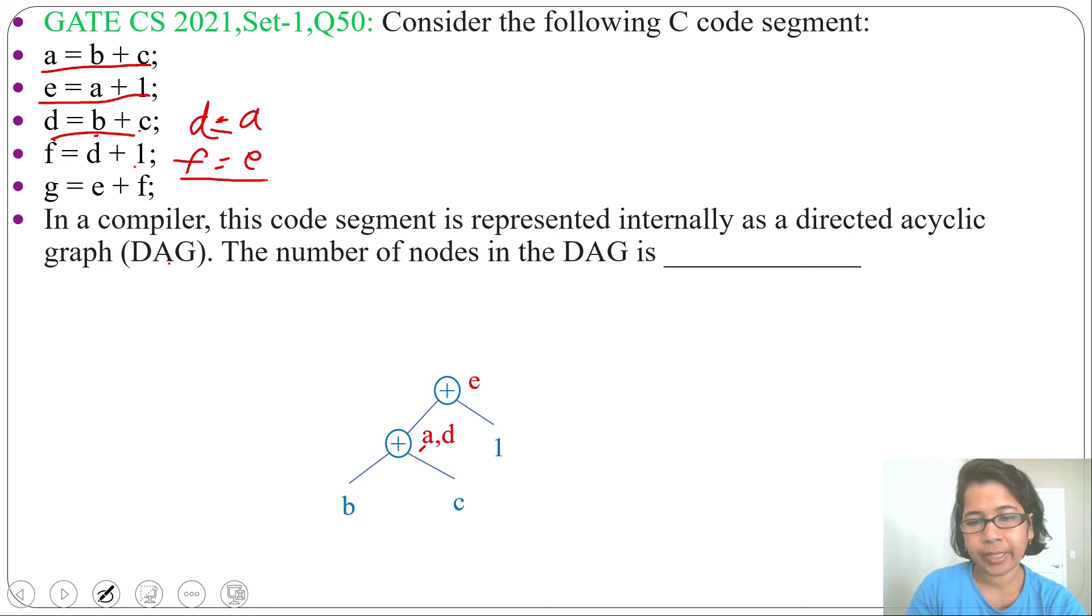Next, g equals e plus f. e and f are for this node, this plus node. So we'll create another node plus. Now for this plus, this plus will be its left side, and again this same plus will be its right side, as this plus is for e and also for f. And we'll add the label g for this new plus.